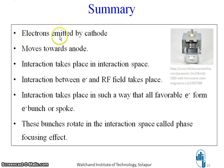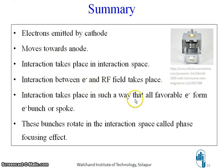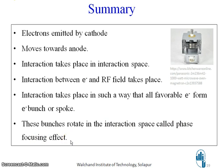Summary: The electrons emitted from the cathode move towards the anode. Interaction takes place in the interaction space between electrons and RF such that all favorable electrons form electron bunches or spokes. These bunches rotate in the interaction space — this is called the phase focusing effect — and this phase focusing effect causes sustained oscillations in the magnetron, confirming that the magnetron works as an oscillator.